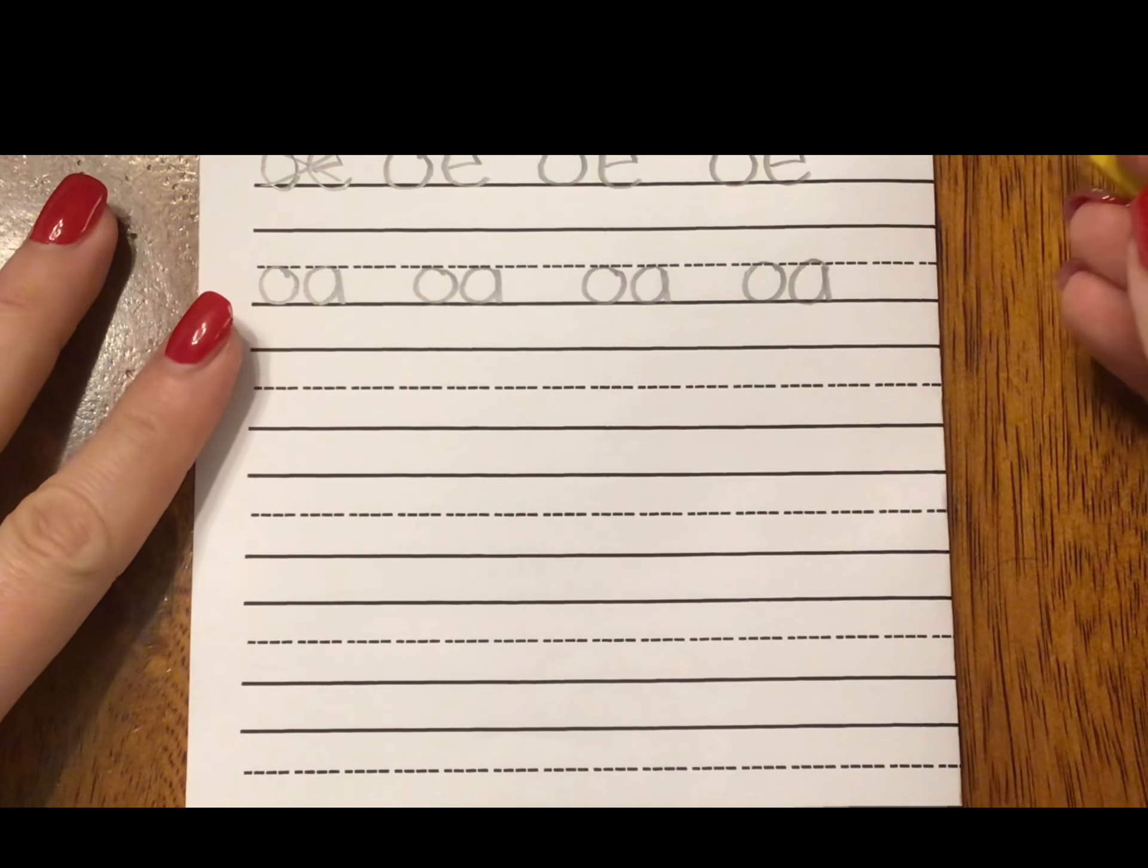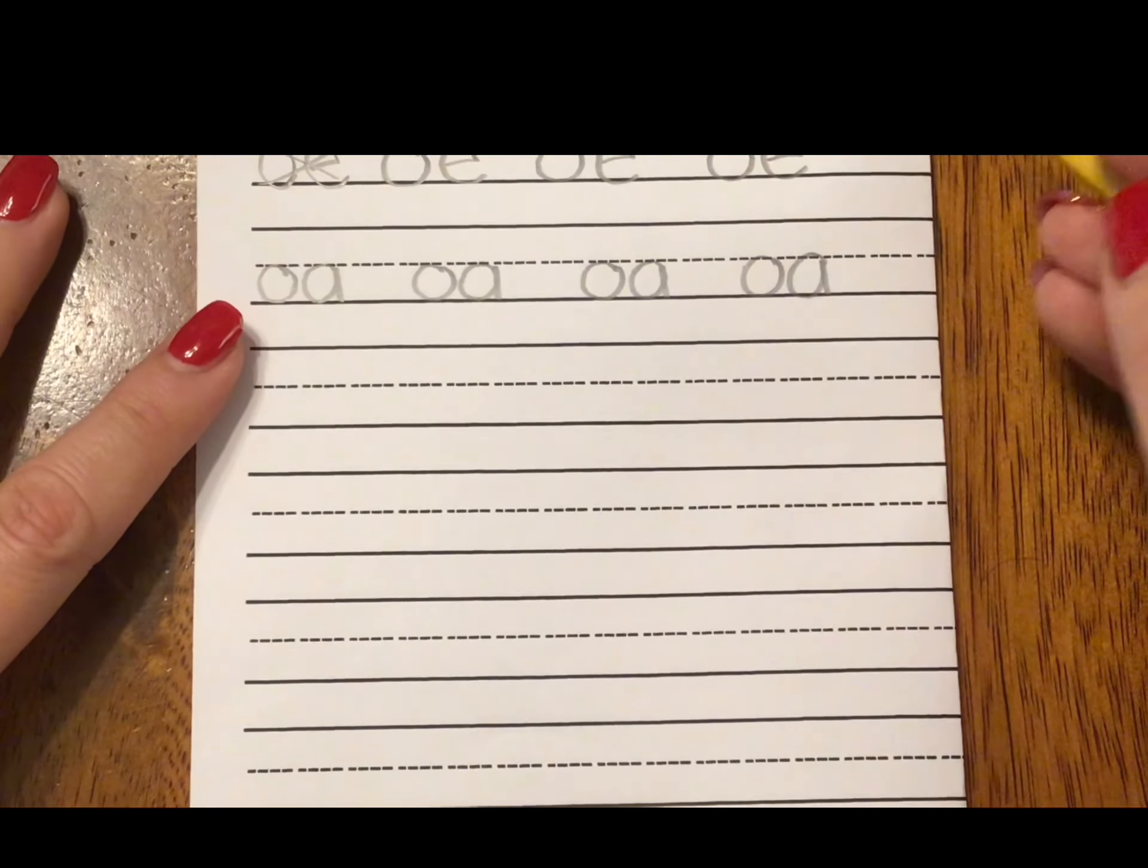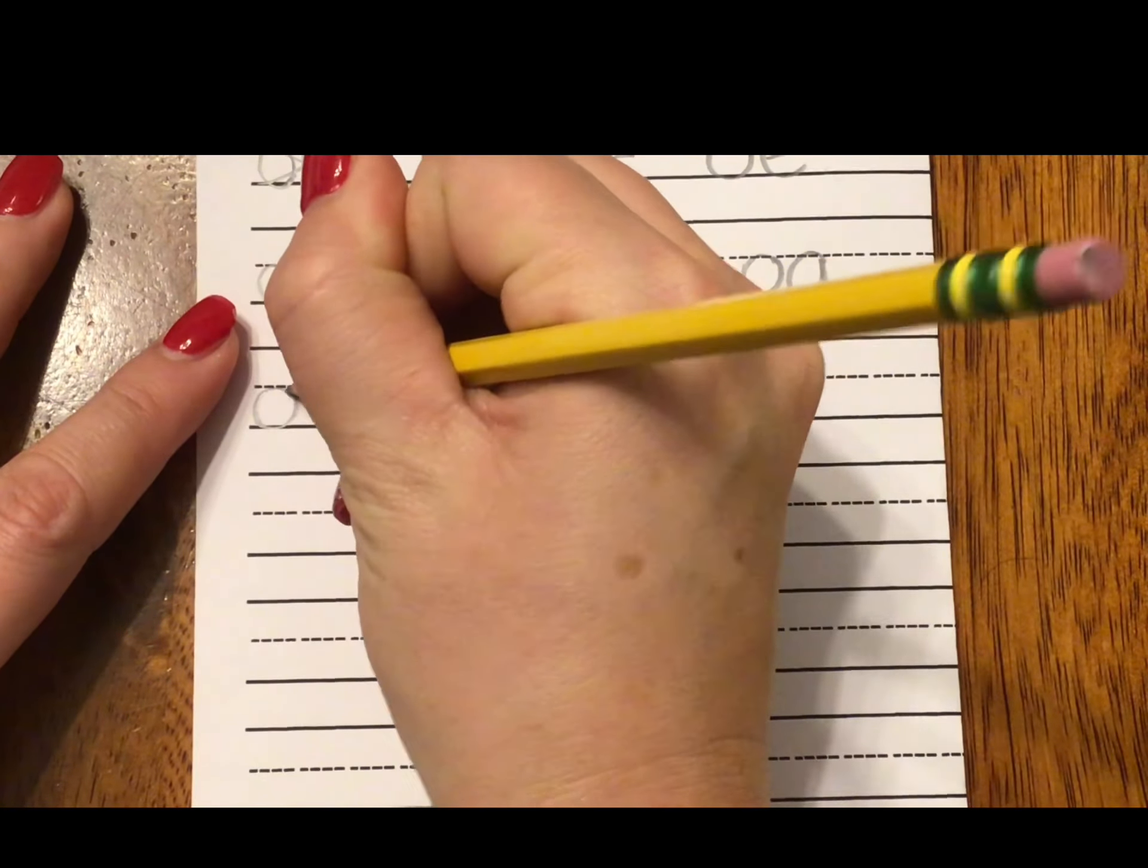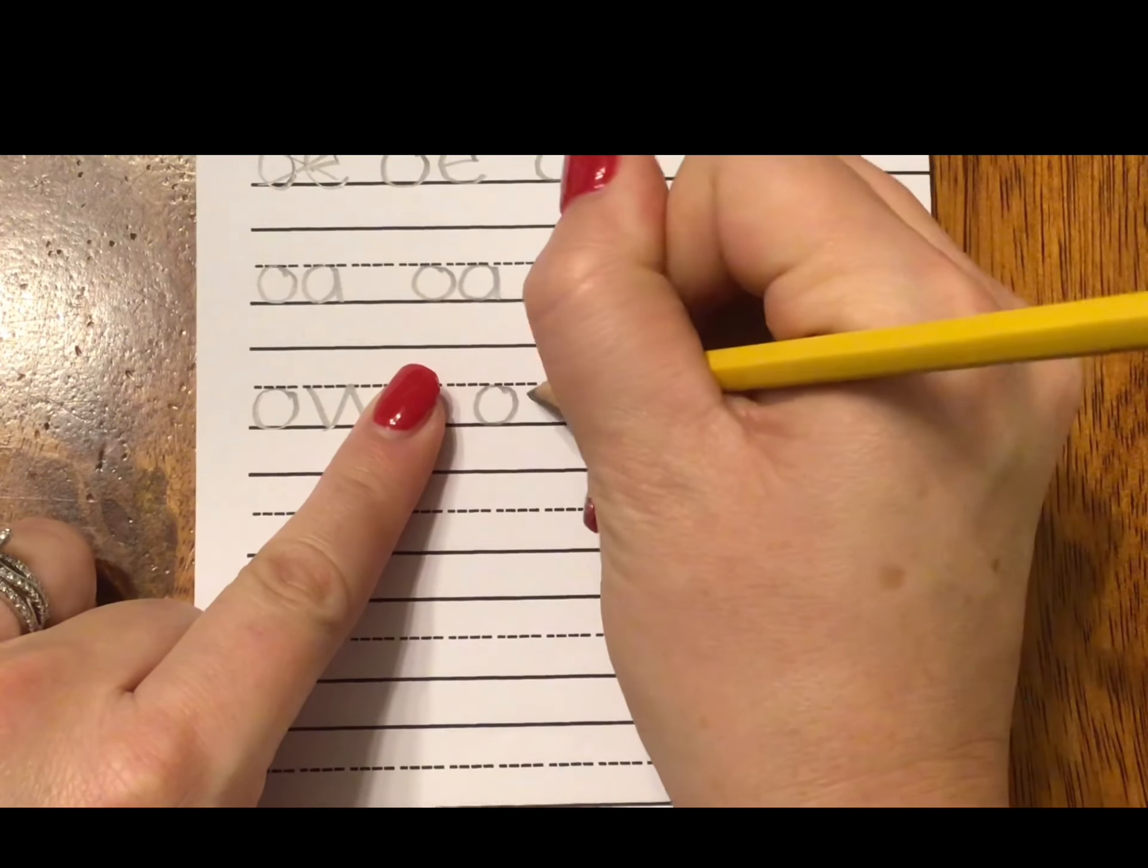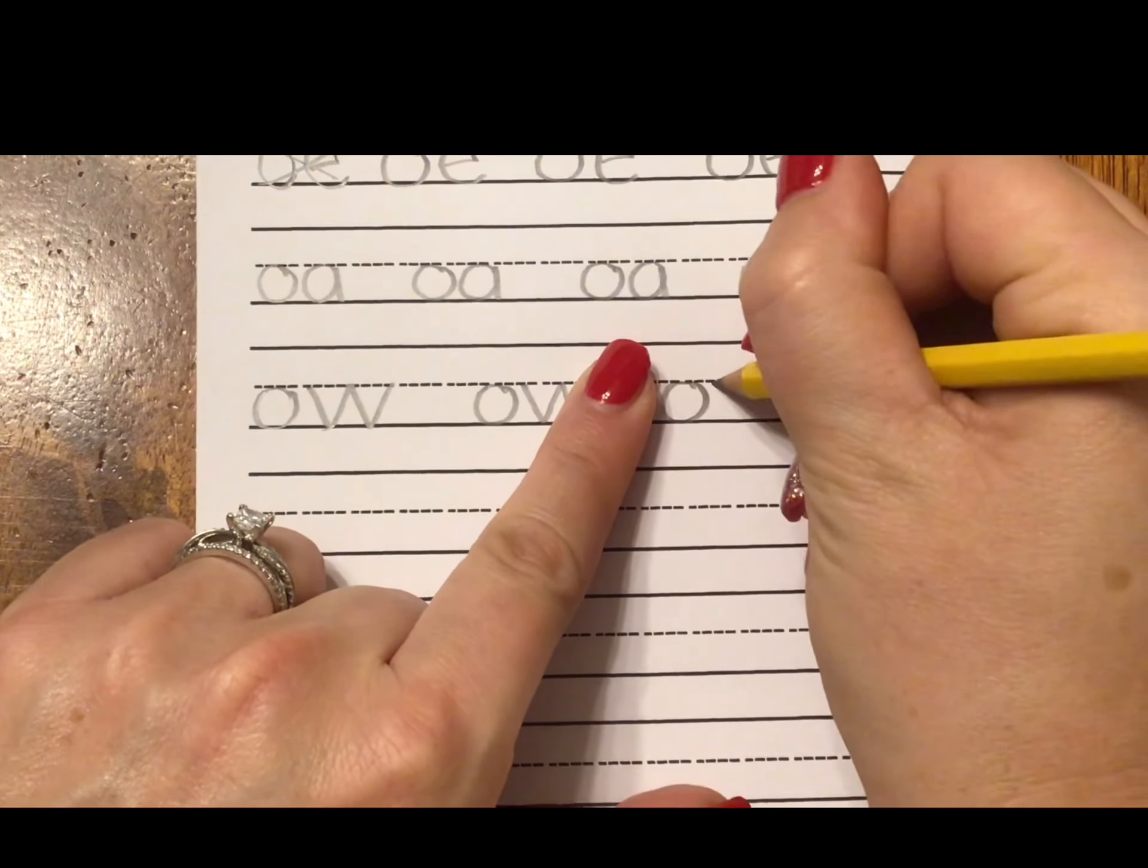Our next sound is O-O. Say it with me. O-O. Go ahead and write it. O-O. So we have O and our W. Making sure my W is touching all three points up here and both points at the bottom. And I go O-O. O-O. O-O.